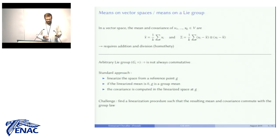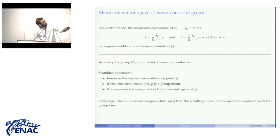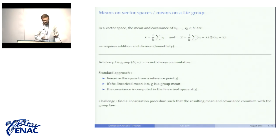Now that we understand the mathematical structure of the set, we can think about how to do statistics. If we have k points x_1, …, x_k in a vector space, their mean and covariance are simply defined as their sum over k, or the sum of outer products over k. This completely relies on the vector structure. On an arbitrary Lie group, the group law is not always commutative, so this definition cannot be generalized in a straightforward way.